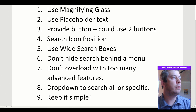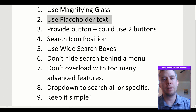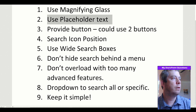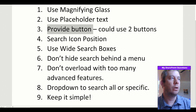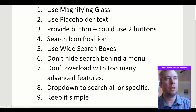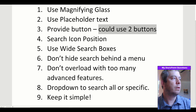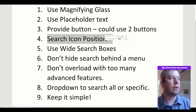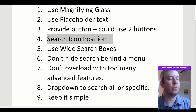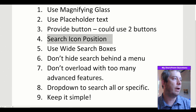Every good search box uses a magnifying glass, so we want to use one. We can also use placeholder text — like 'search here' — which is the text behind the search box. In PowerApps we want to provide a button; we could use two different buttons if we wanted to search different types. Search icon position — the magnifying glass can be on the right or left side depending on the design, like Bing or Google.